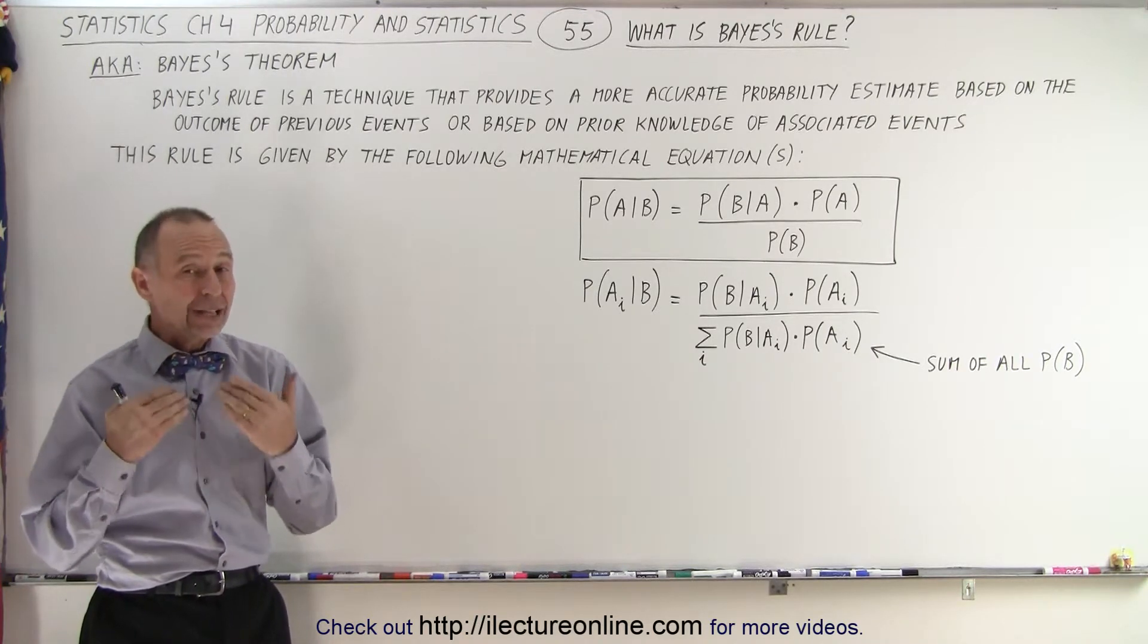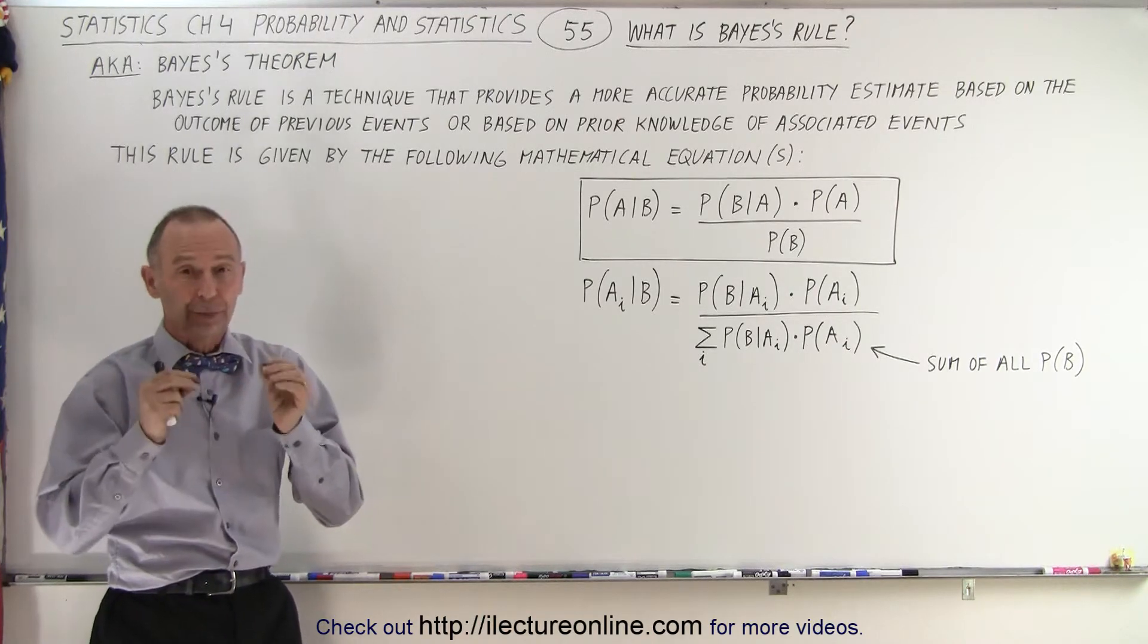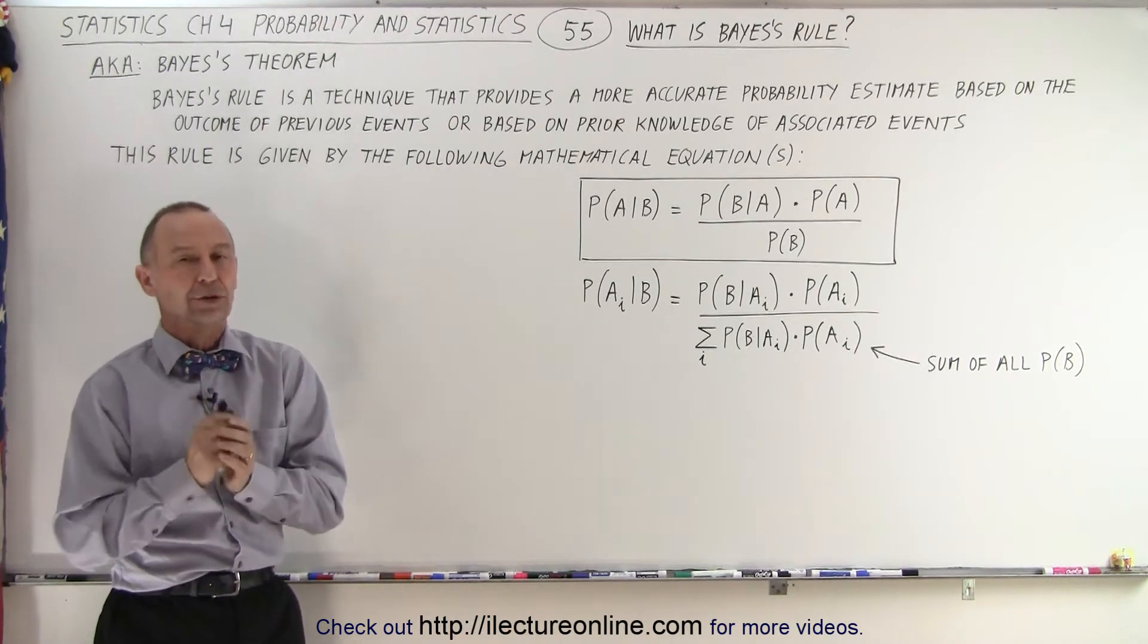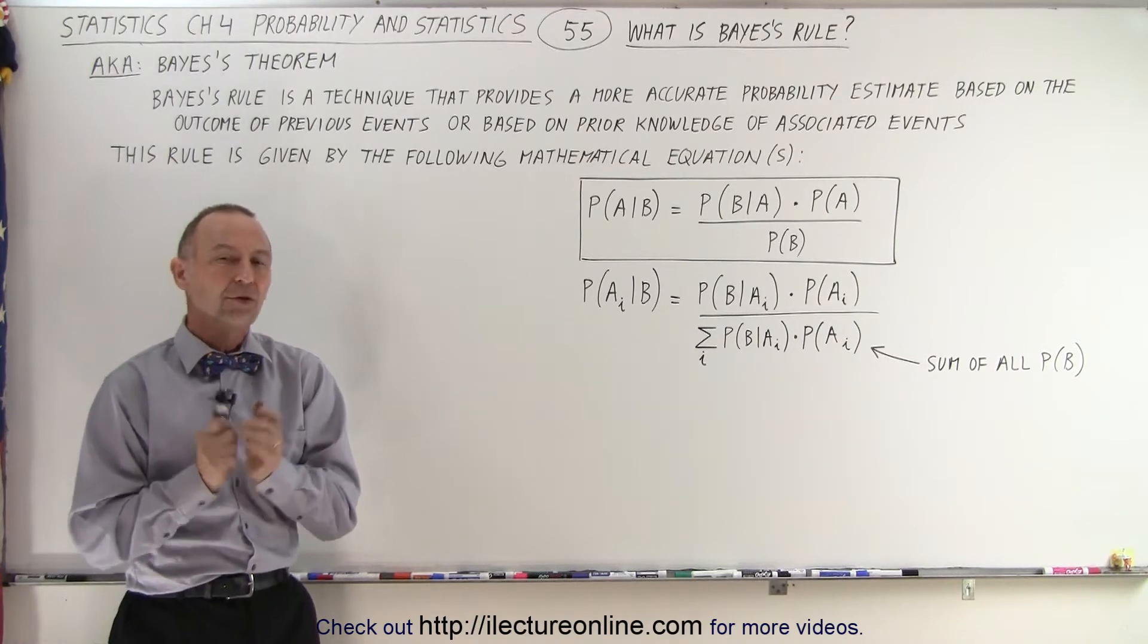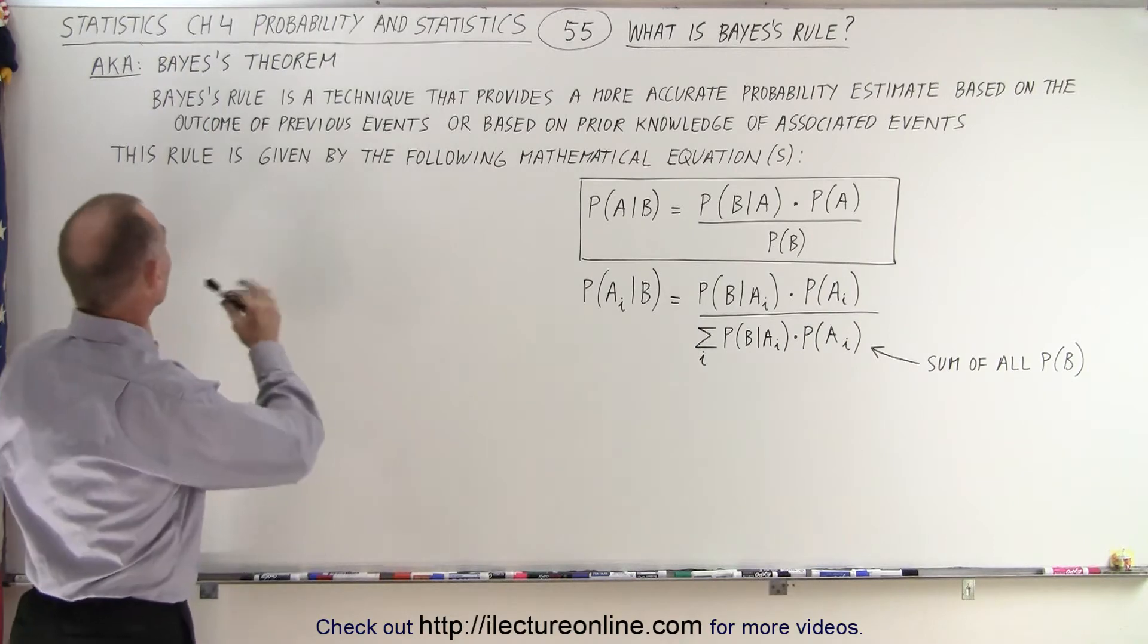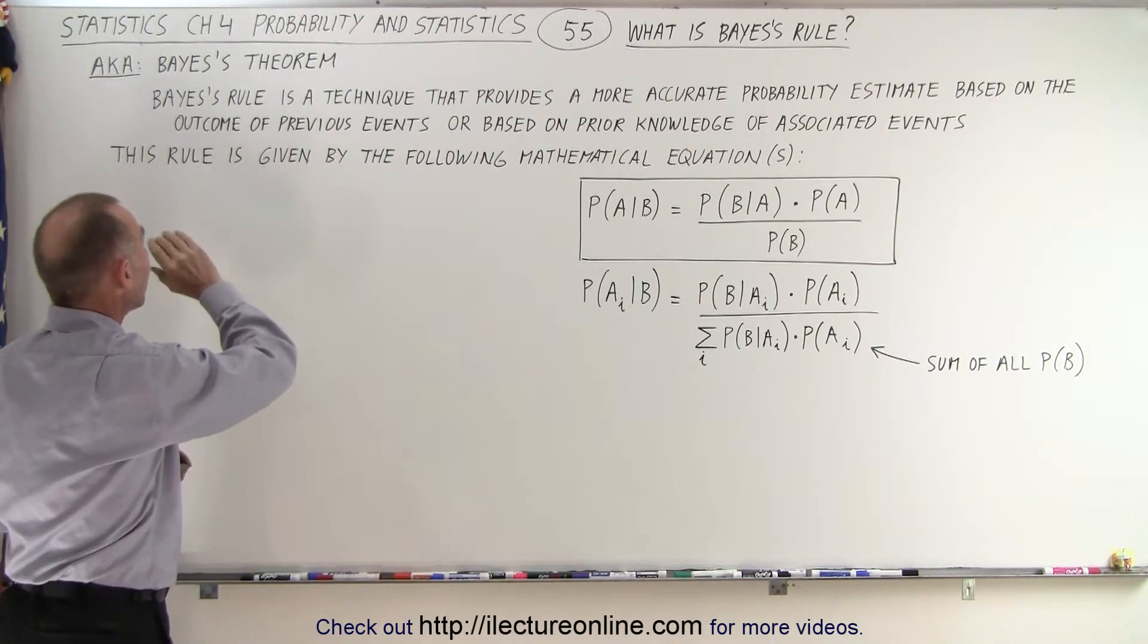Bayes' rule is a very interesting approach to finding some accurate results when we're looking for the probability of an event occurring, especially if some prior knowledge is known. So the definition of Bayes' rule is, and it's also of course known as Bayes' theorem.